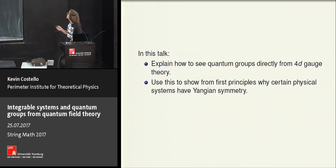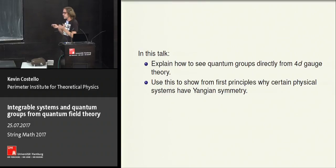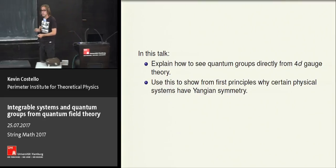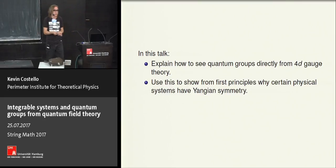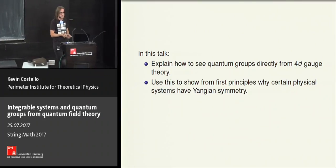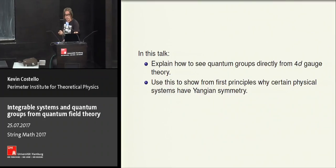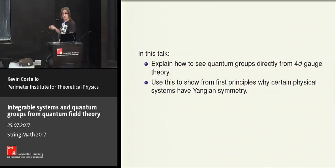The main goal of today's talk is to explain how this 4D theory allows us to see the quantum groups directly, and from this we'll be able to see why these physical systems have, for instance, Yangian symmetry. Let me give you some background about the four-dimensional gauge theory I'll be considering.